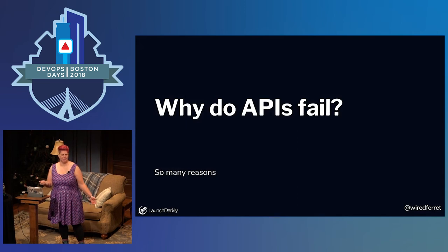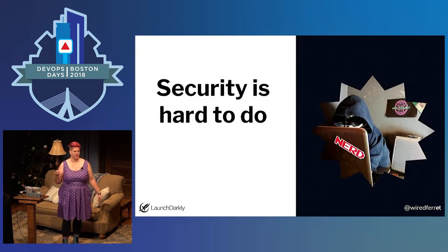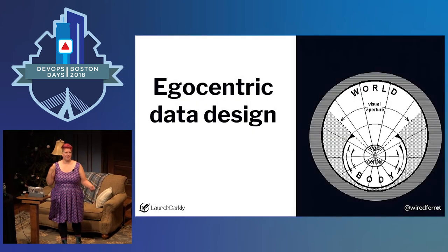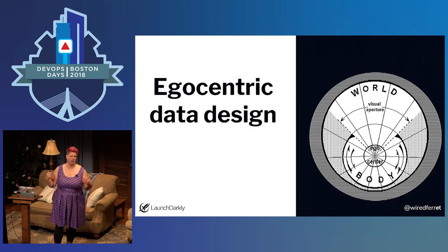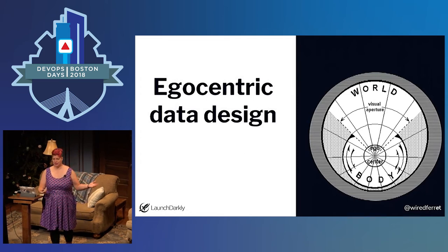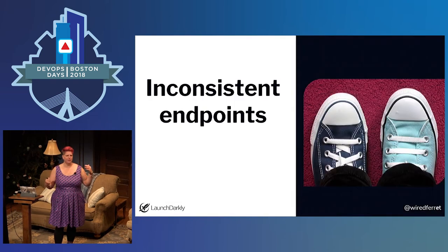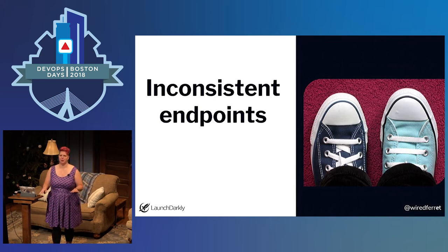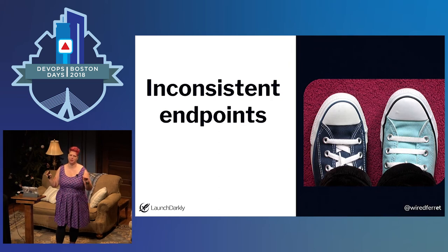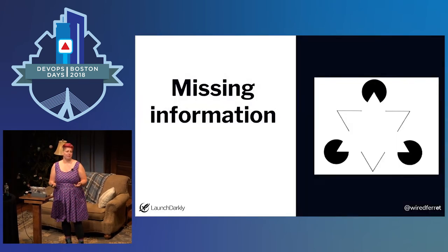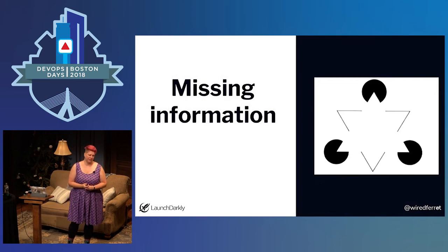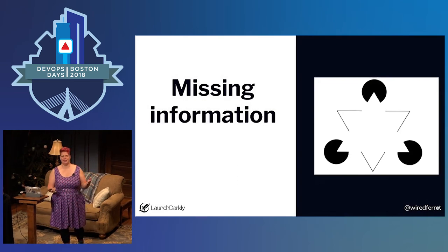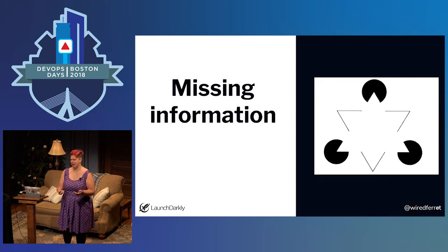So why do APIs fail? Security is hard to do. We design from an egocentric point of view instead of thinking about people who might use an API differently than we planned. We offer inconsistent endpoints — if you don't have a style guide for naming your endpoints, please go home and make one, because mixing camel case and underscores is making all of us sad. And we're missing information — there's insufficient documentation, or stealth requirements that nobody has talked about.